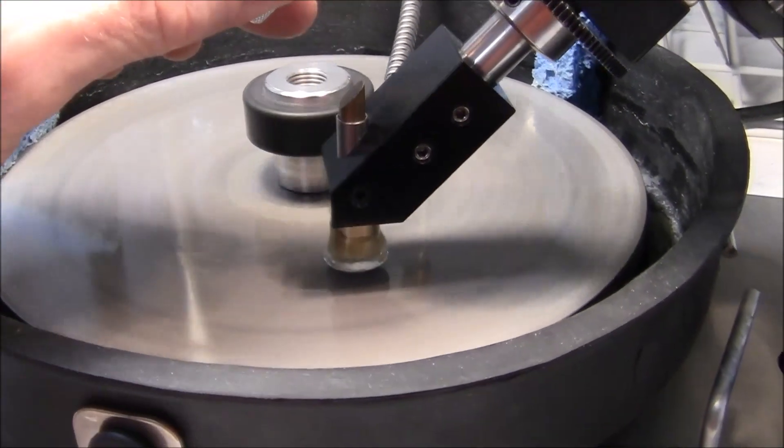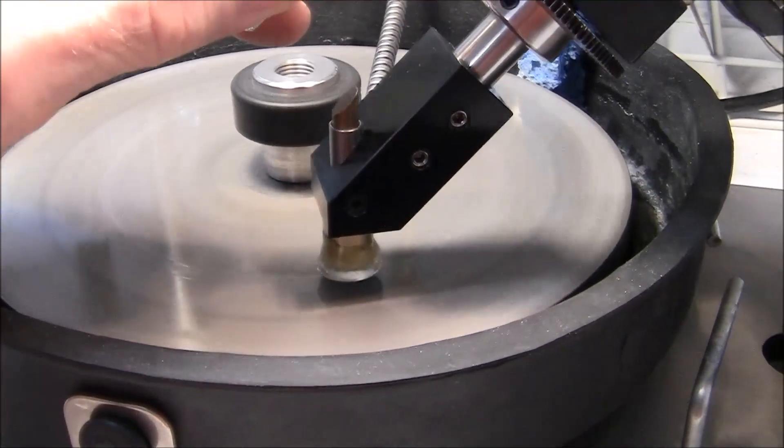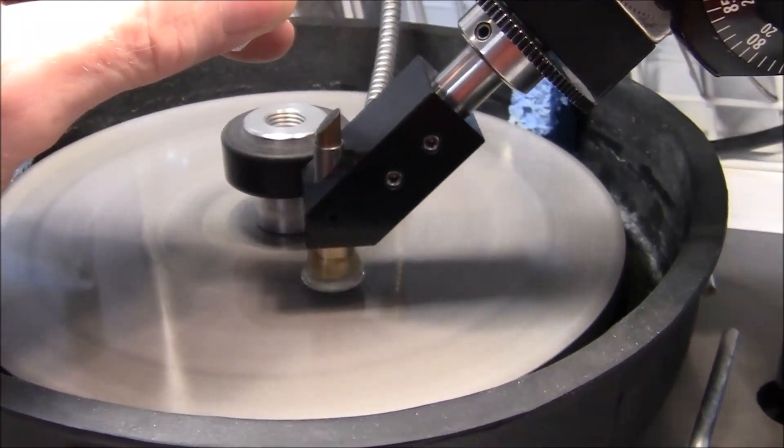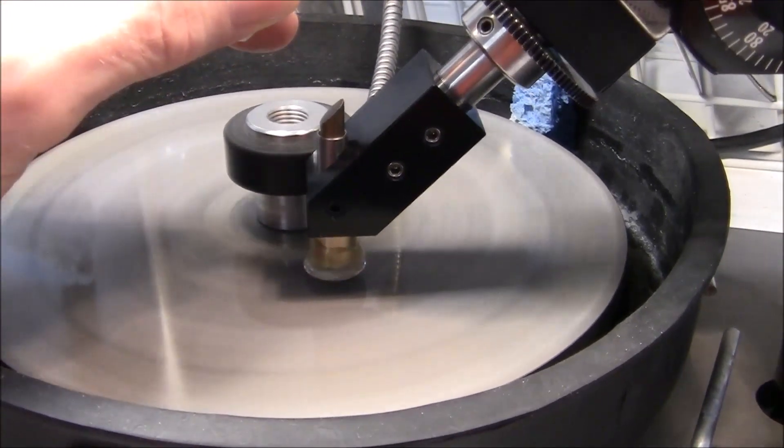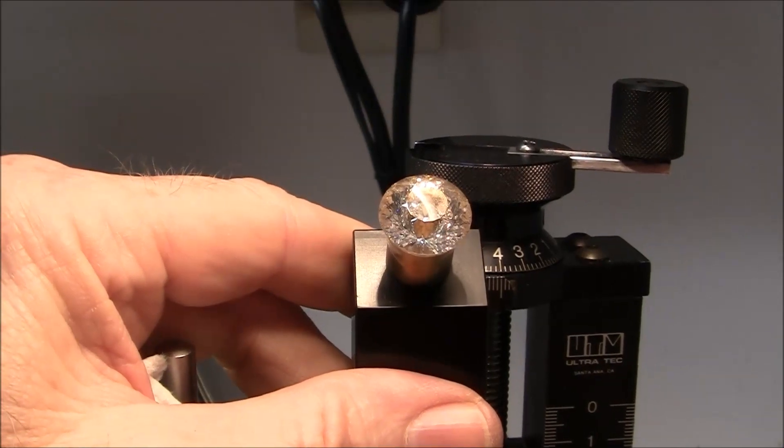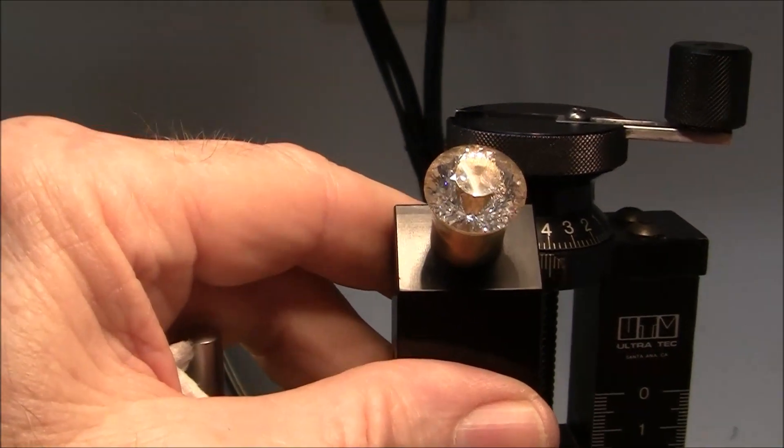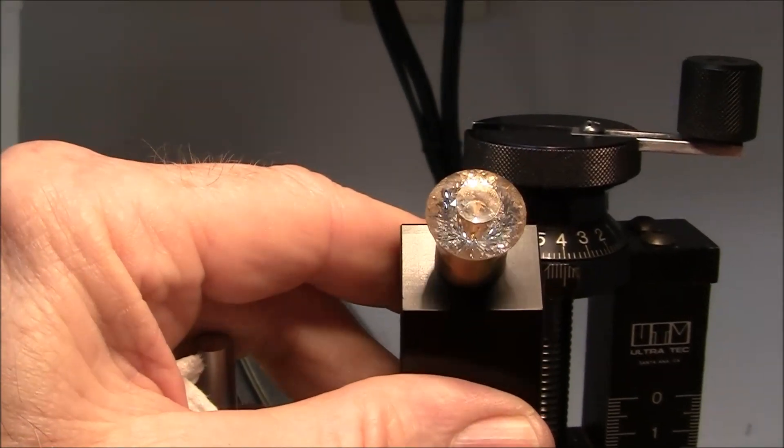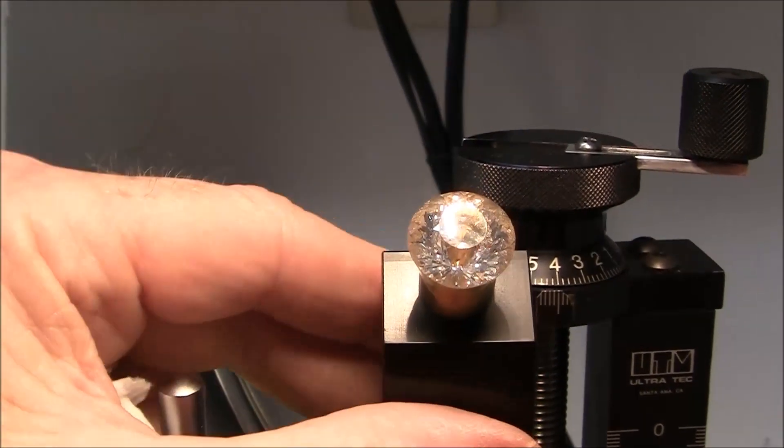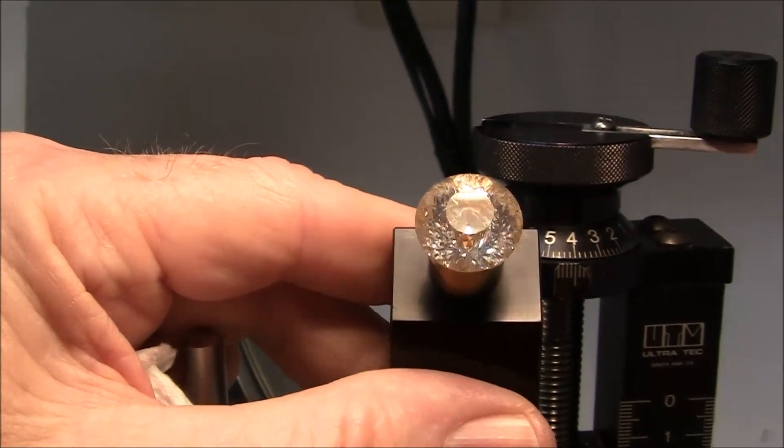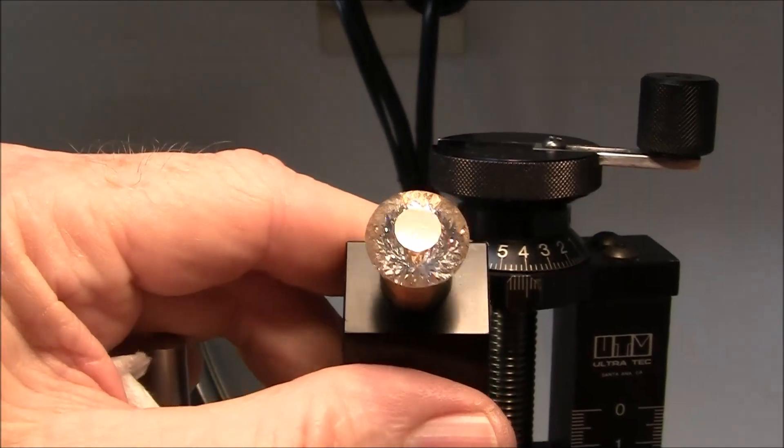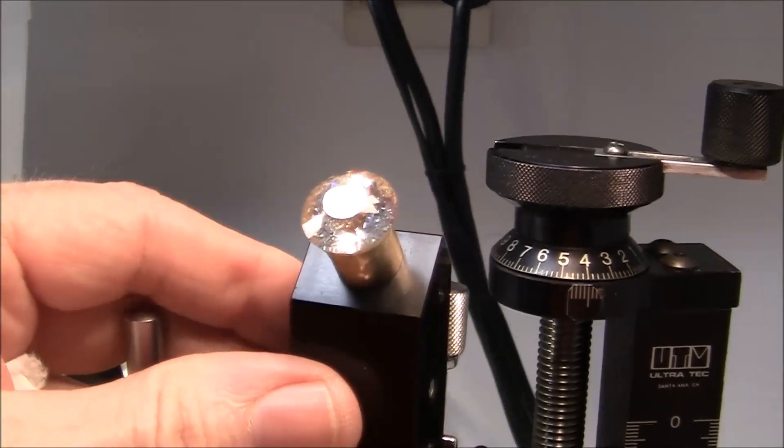I'm now going to cut the crown. So I eliminated the very last row of facets, the tier of facets, the very last set right near the table. I cut through those and I have a little bit larger table now than what it would have had. So this is what I wanted to do. This stone is so brilliant. A larger table is not going to hurt the brilliance of it at all.